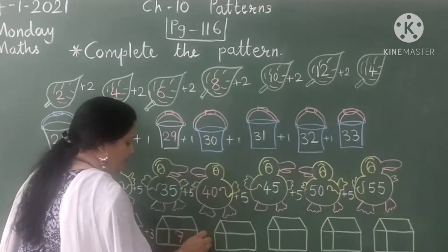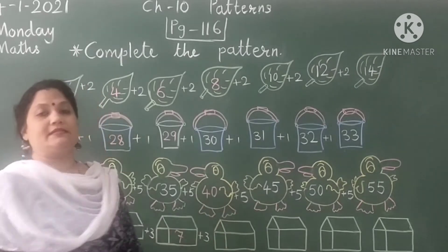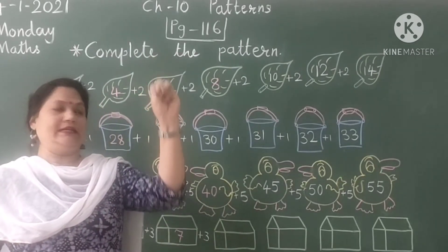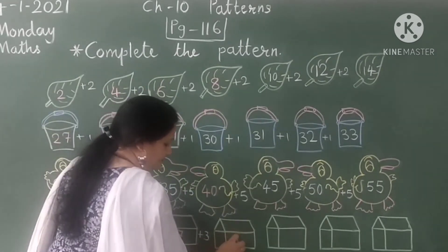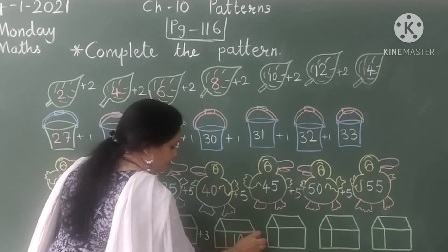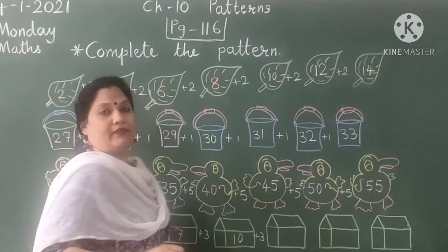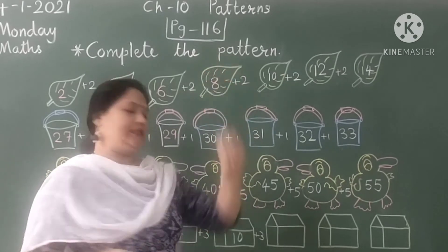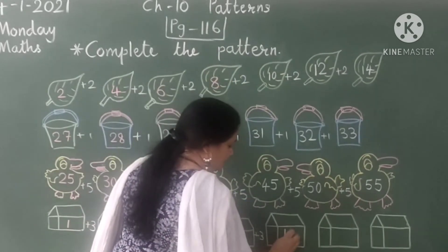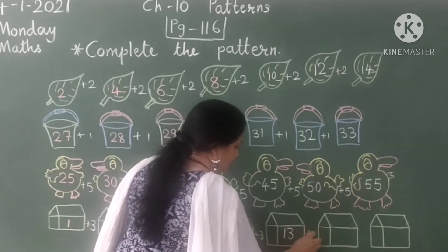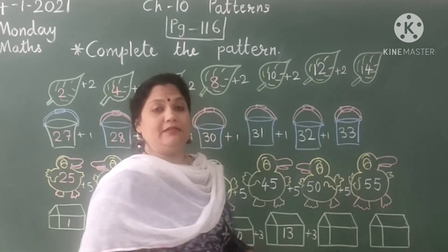Now let's add 3 more in 7. After 7, 8, 9 and 10. Plus 3. After 10, 11, 12, 13.